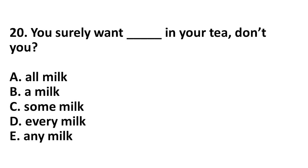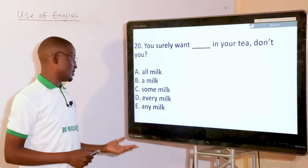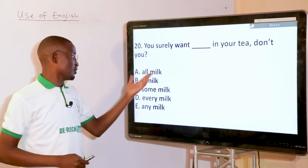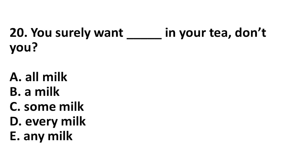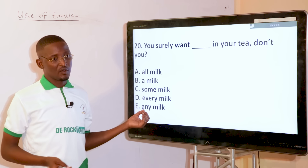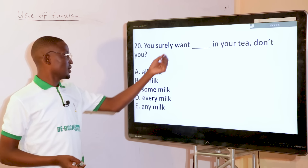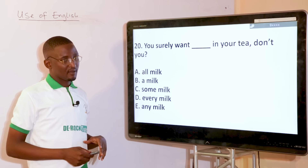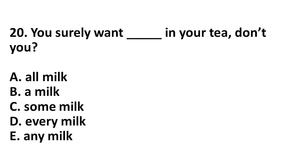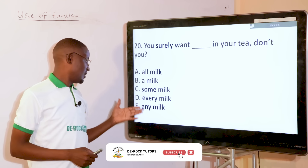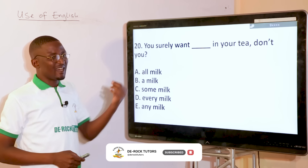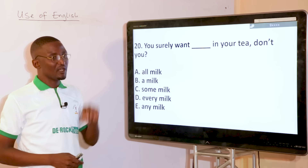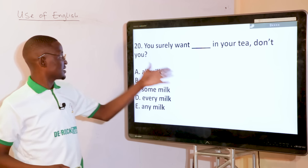You surely want dash in your tea, don't you? Options: all milk, a milk, some milk, every milk, any milk. Milk is a non-count plural word — you cannot have milks. The best quantifier for a non-count word is some. Some can be used for both countable and uncountable nouns, while all, a, every, and any are more determinate or indefinite in a different sense. So the answer is: you surely want some milk in your tea, don't you?